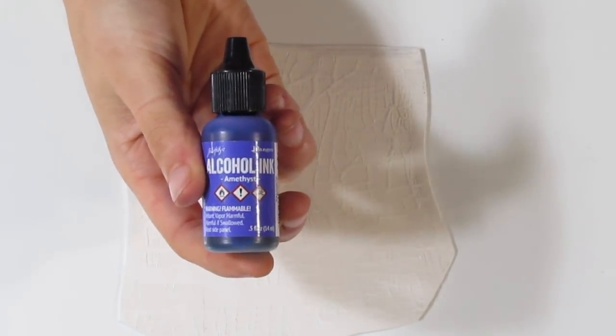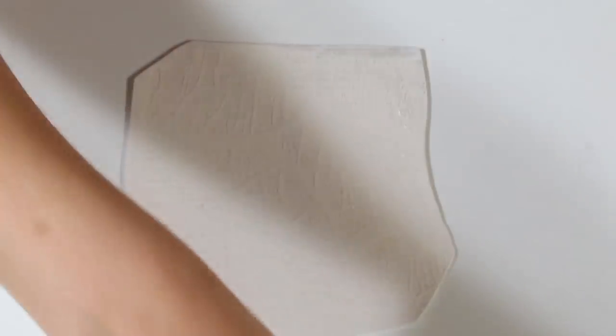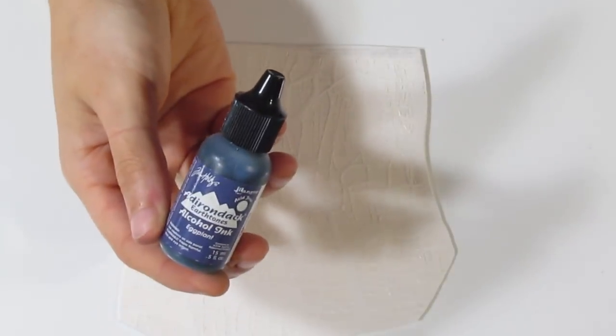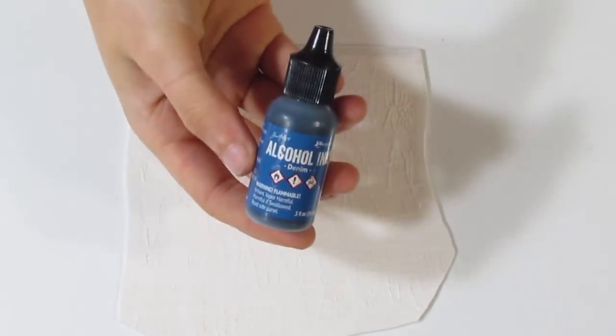I am going to add alcohol inks to this piece. Now, this piece is going to be different from the purple one that I've made. I'm going to be using different alcohol inks. For the purple one that I showed you before, I used amethyst, sailboat blue, and teakwood. For this one I'm going to be using latte, eggplant, and denim.